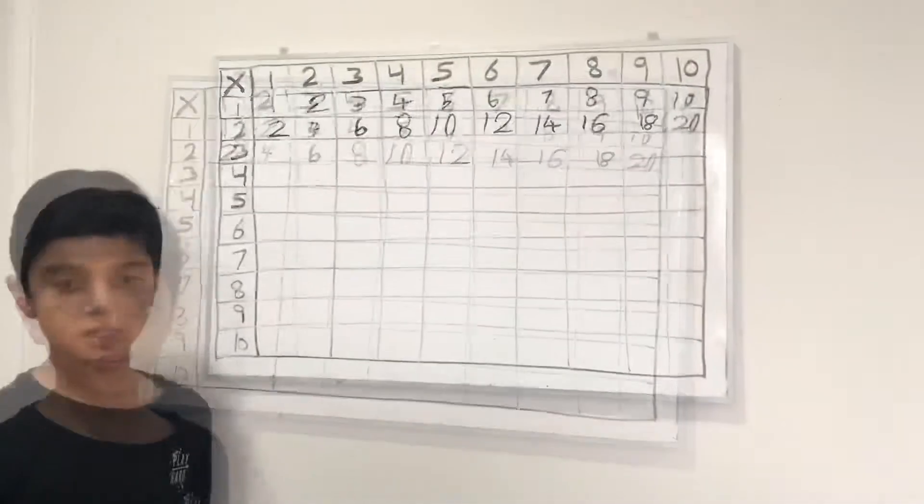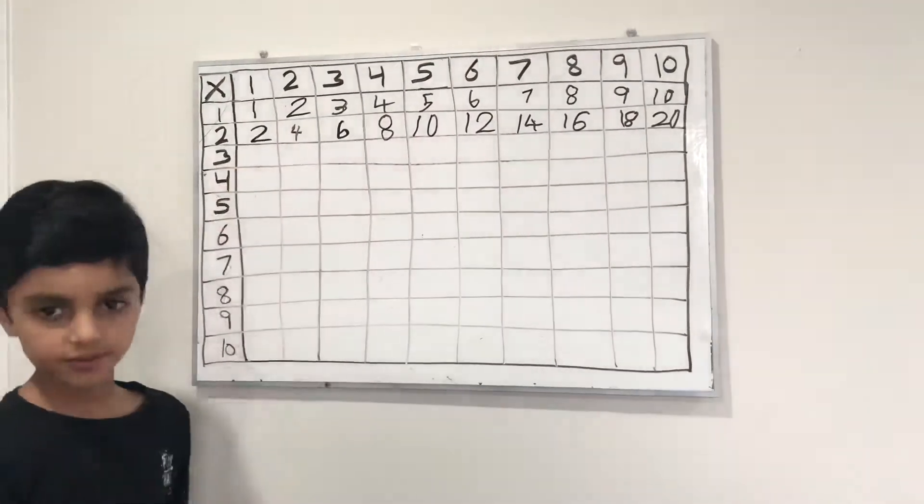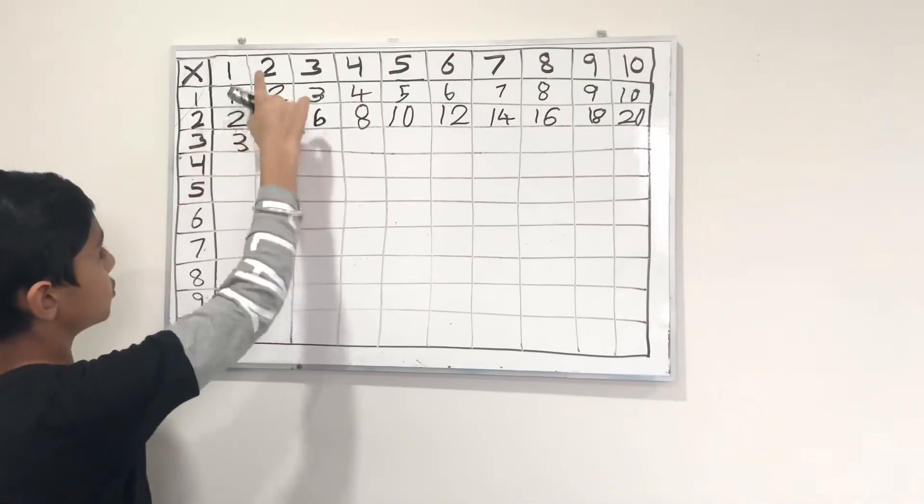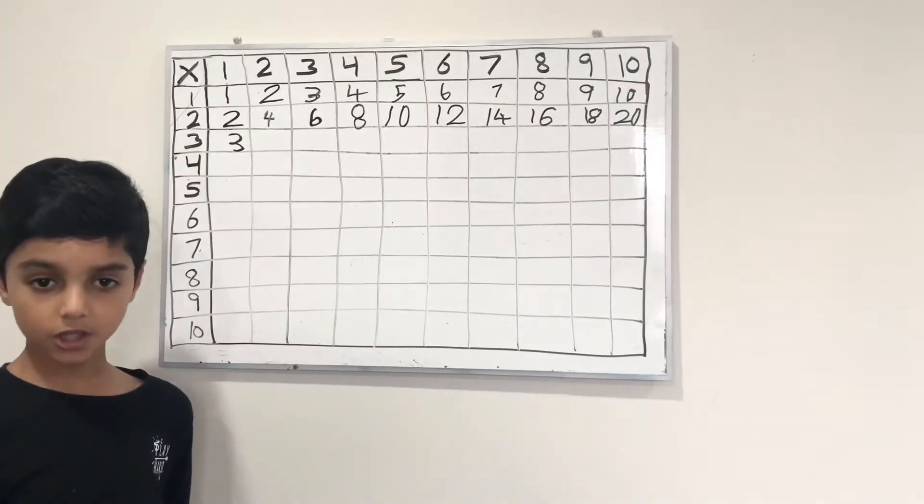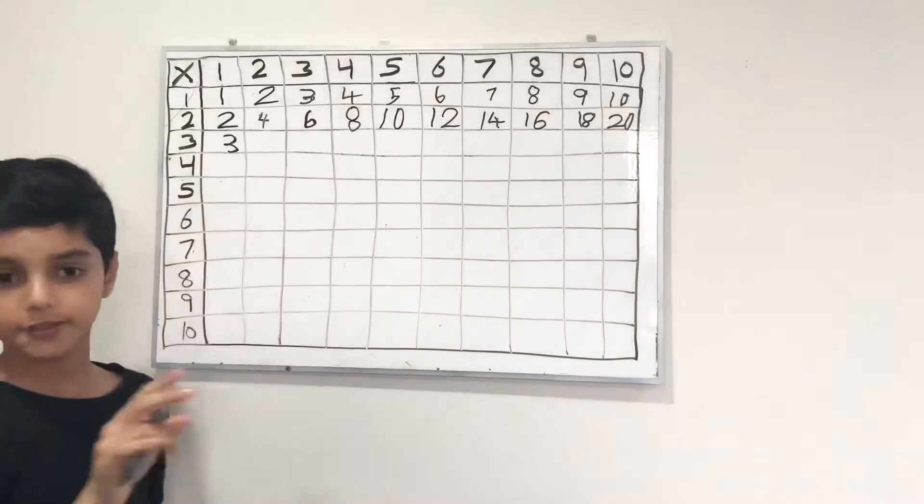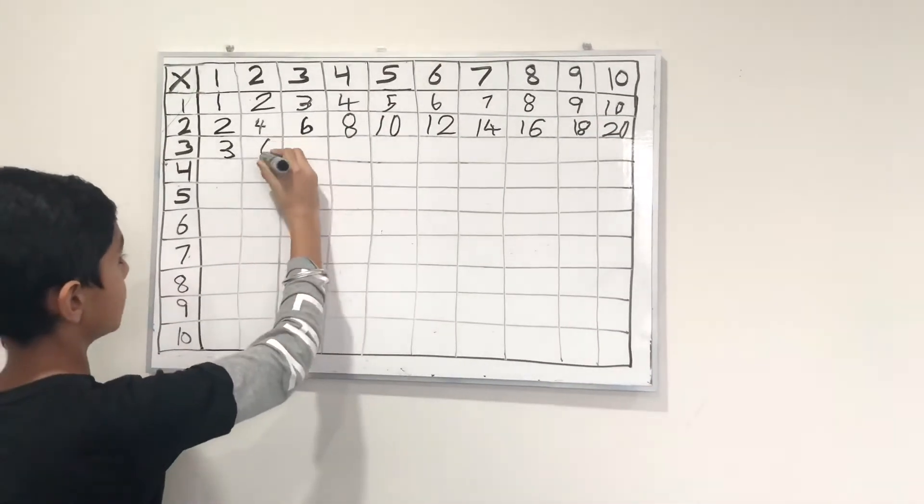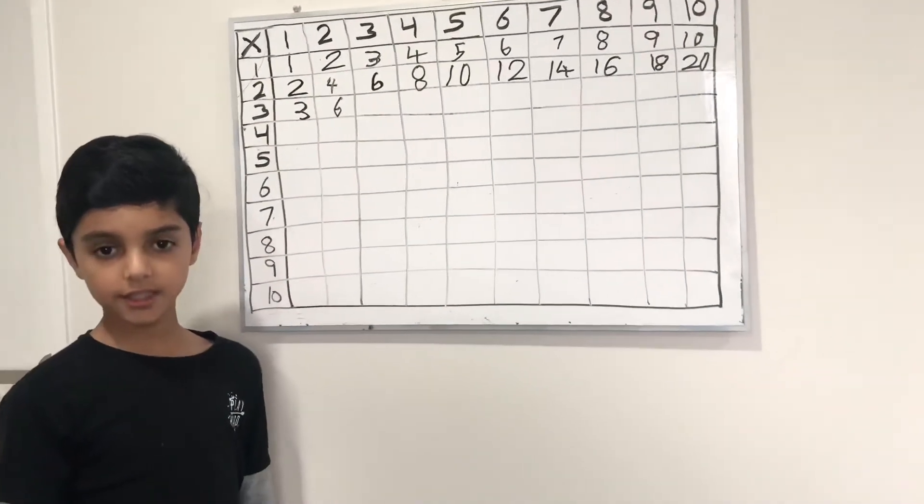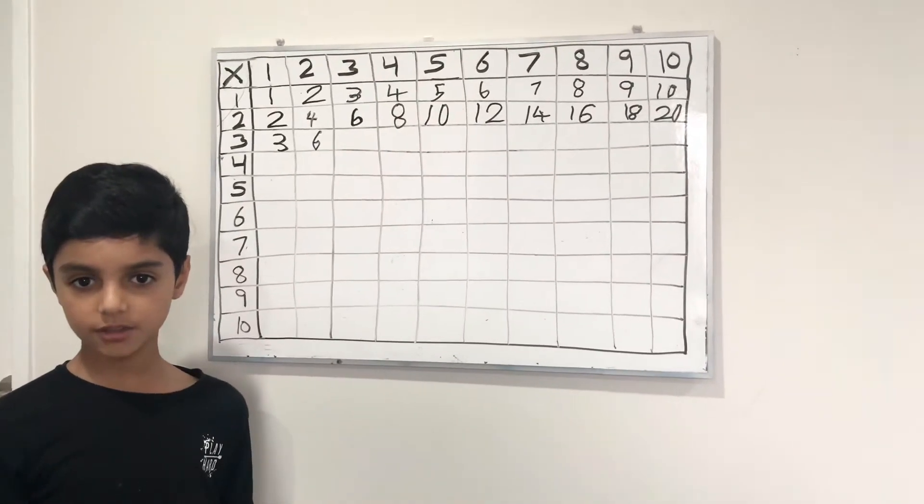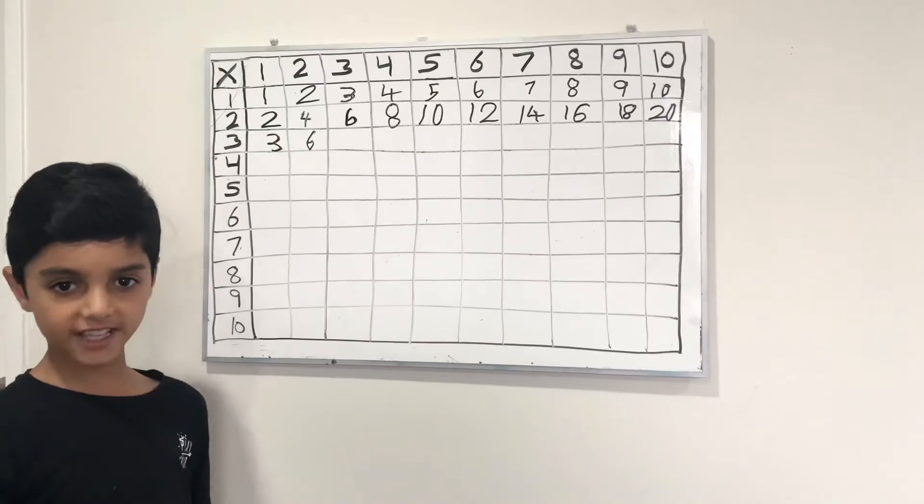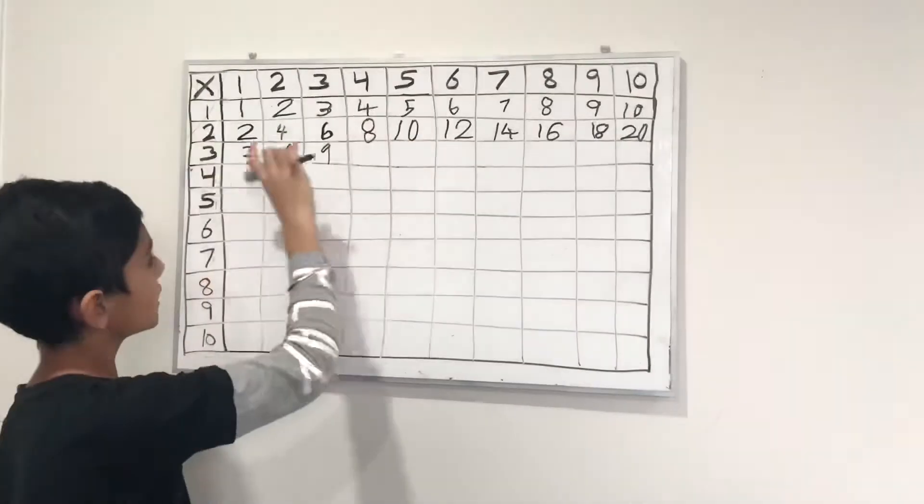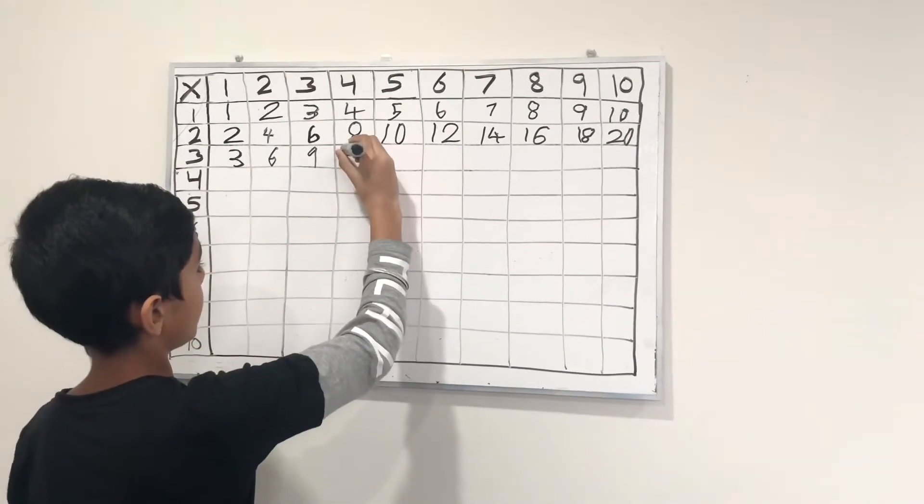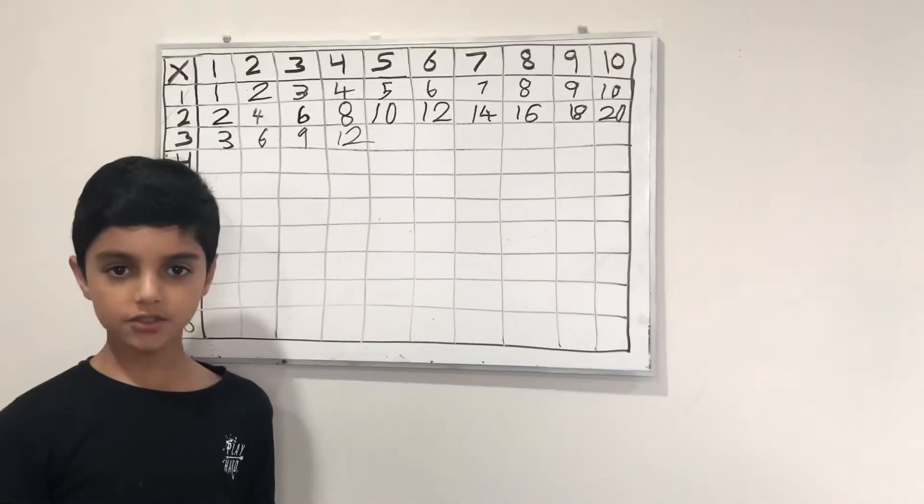Let's do the table of 3. 3 times 1 is 3, 3 times 2 is 6 because you are adding 3 two times. 3 times 3 is basically 3 plus 3 plus 3, which equals 9. 3 times 4 is basically adding 3 four times, which is 12. Can you try to solve the other ones?